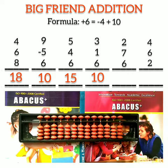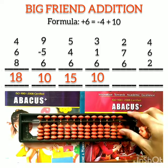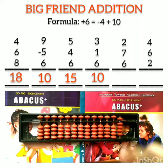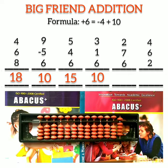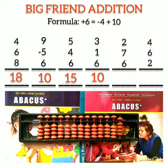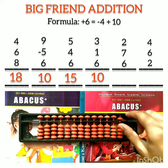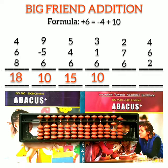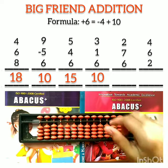Question number 5. The first number is 2, the second number is 7, the third number is 6. We have to add 6, but 6 is not possible. So we apply minus 4 plus 10. Our answer is 15.